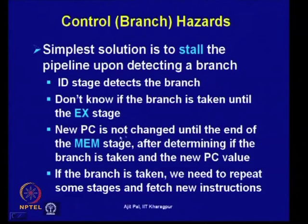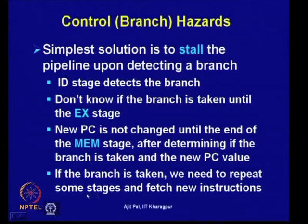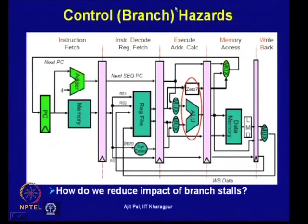The new PC is not changed until the end of the memory stage. After determining if the branch is taken and the new PC value is known in the memory stage, if branch is taken, we need to flush the instructions fetched from consecutive addresses — PC+4, PC+8 — and fetch new instructions from the new target address.